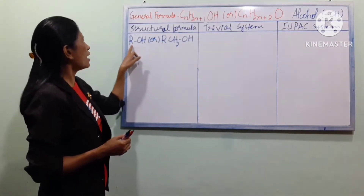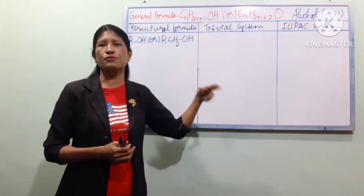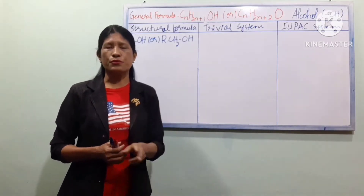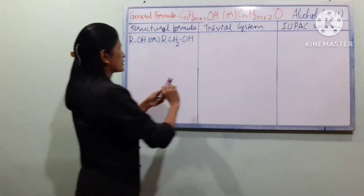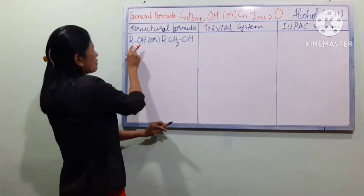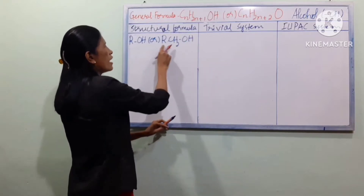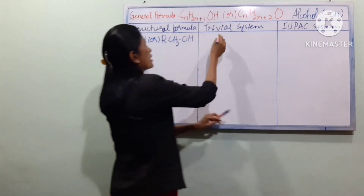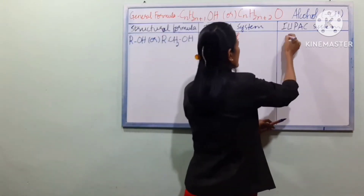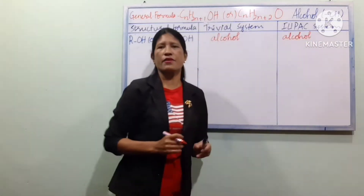Now let's look at this. R is represented as R, with CH2, CH2, CH2. So we are going to ask about this system. In this system, it is called alcohol. This is the general name.